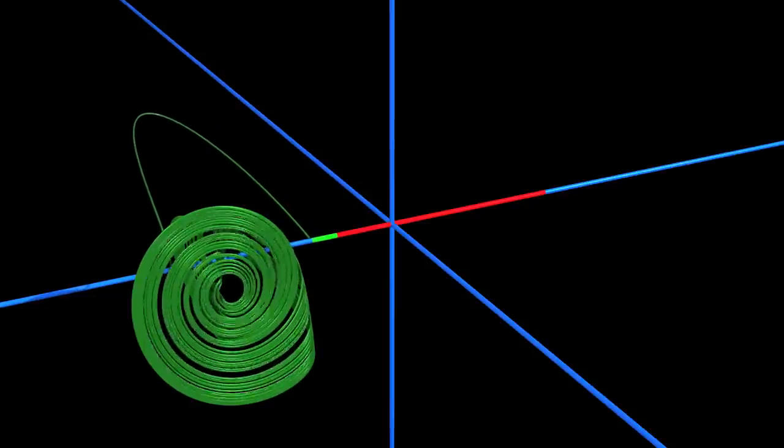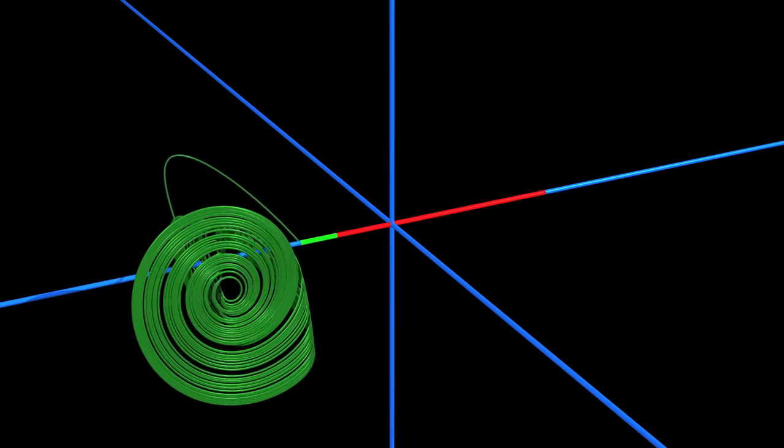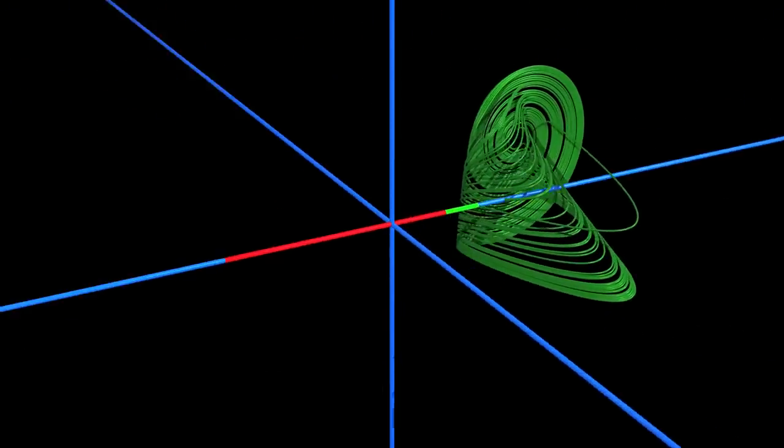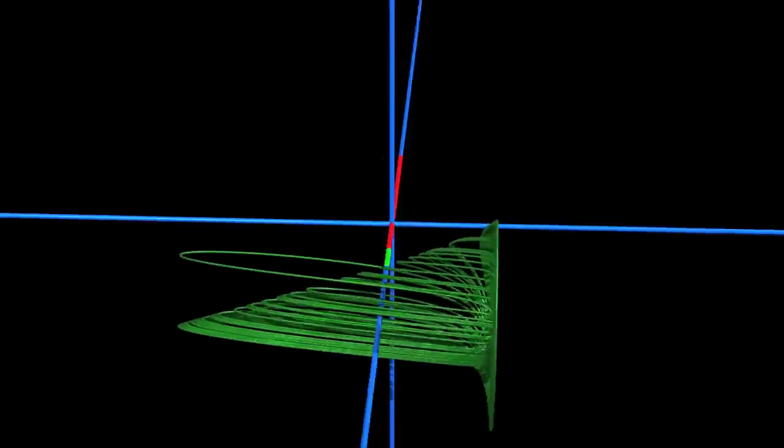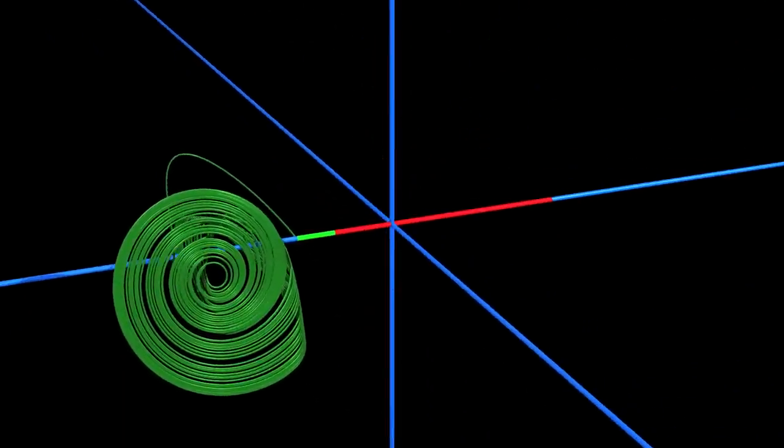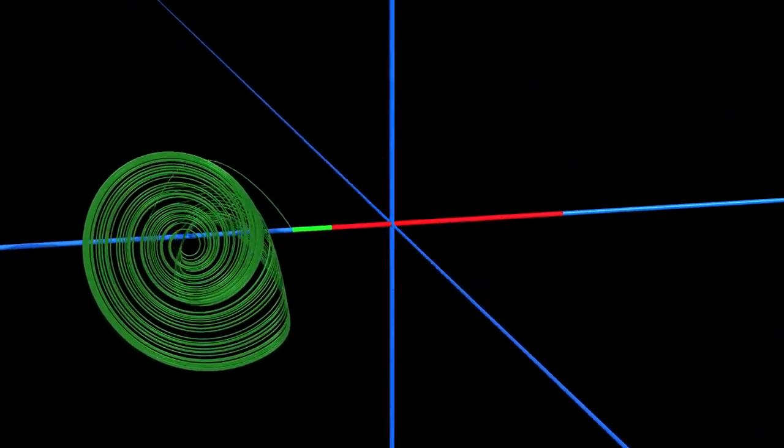Space appears to be split into two regions. If one starts with a point in the first region, the trajectory accumulates on the orange attractor. If we start in the second region, we end up at the green attractor. In other words, there is no SRB measure since the long-term behavior depends on the initial condition. In fact, there are two SRB measures.